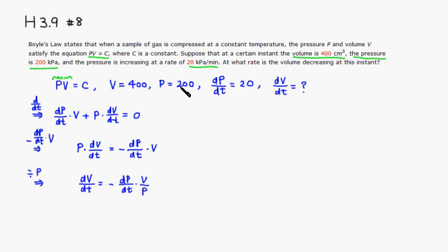Then we have everything we need. So this is going to be equal to, just plug in numbers. So it's a negative. So this is 20 right here, so plug in 20, and times volume is 400, so put 400 here. And the pressure is 200, P is 200, so 200.